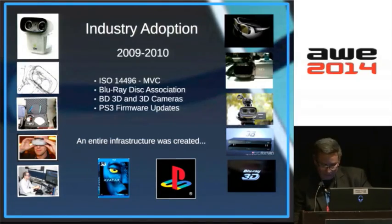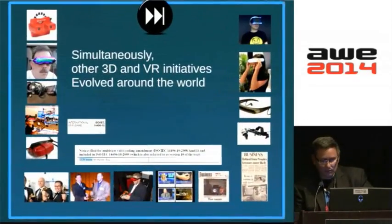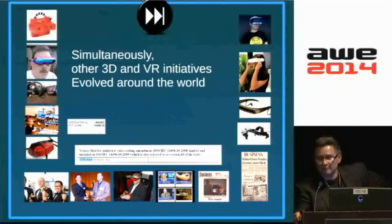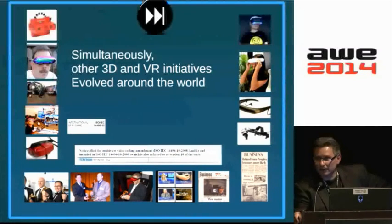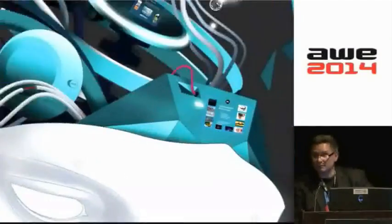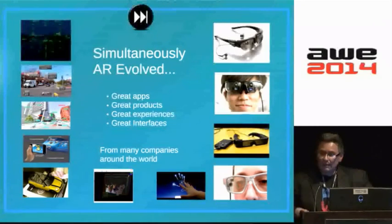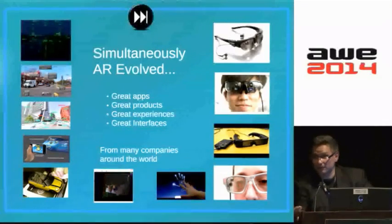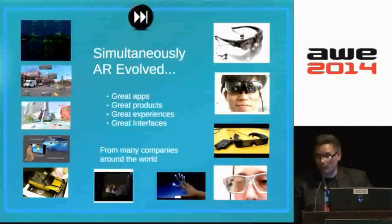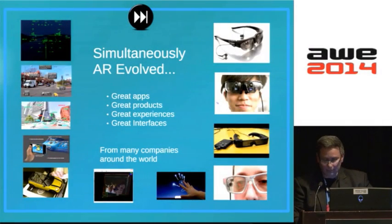You just started to see a lot of three-dimensional Blu-ray players in the market, cameras as well, some PlayStation 3 firmware updates that were pushed. We were actually the first company to show all these things before they went to market. So it was very nice to see this kind of progression of the industry. Simultaneously, many other initiatives came by — augmented reality and virtual reality — it all started to evolve around the world. We're not the only company; there were many companies in that space. Augmented reality also started to evolve simultaneously — from the heads-up display in jet fighters all the way to cool applications on your iPhone, and great AR displays like the Epson and Vuzix.